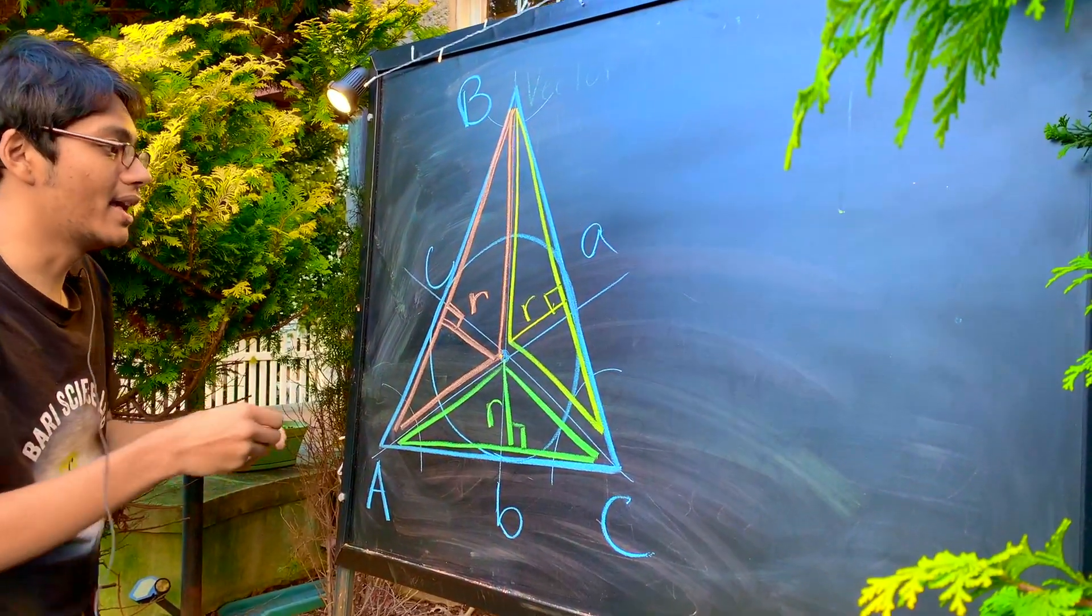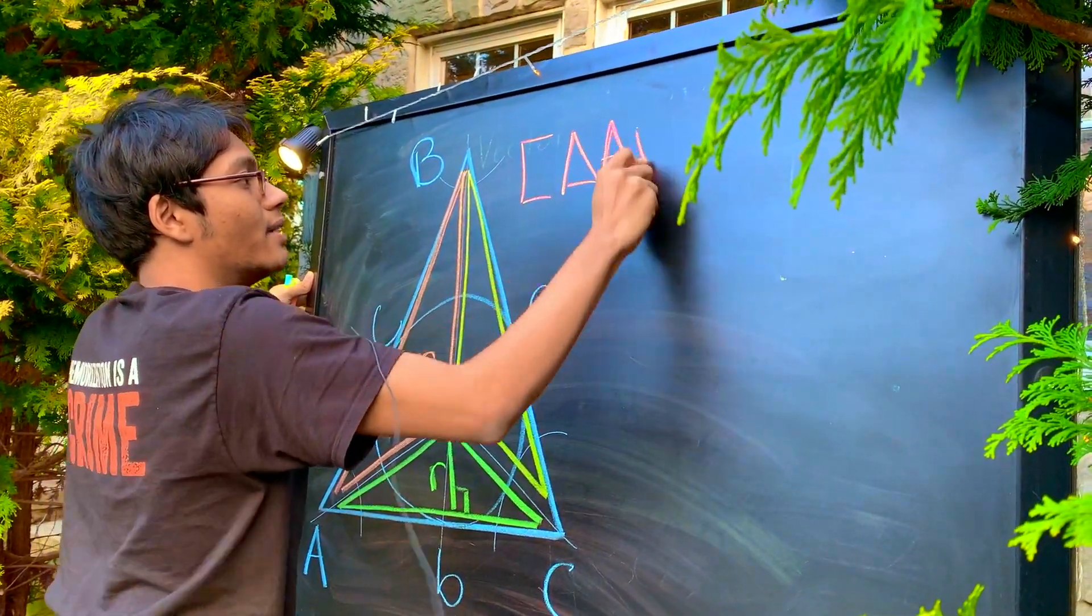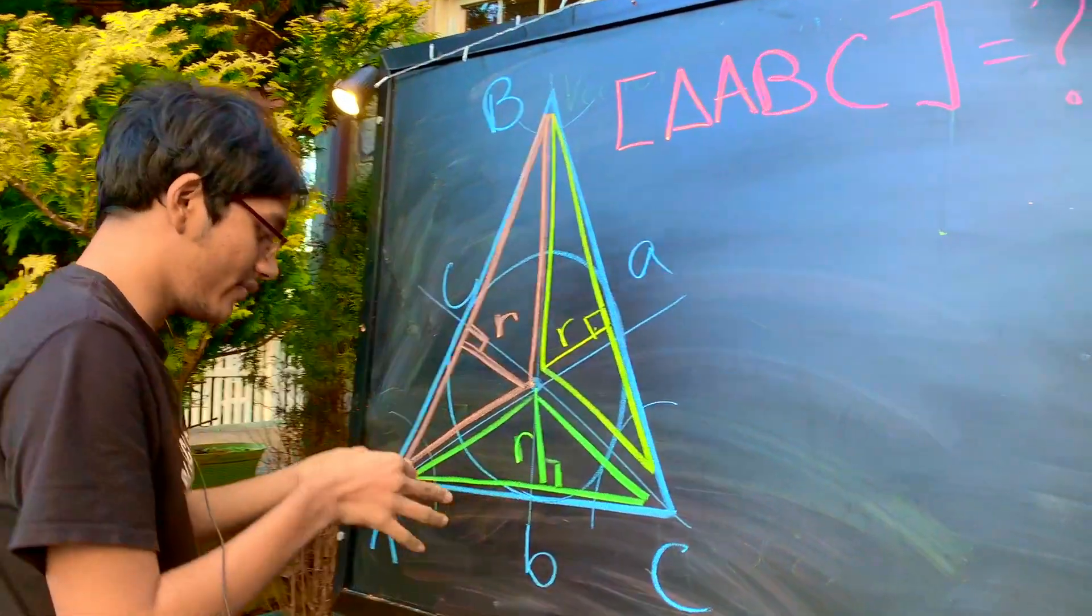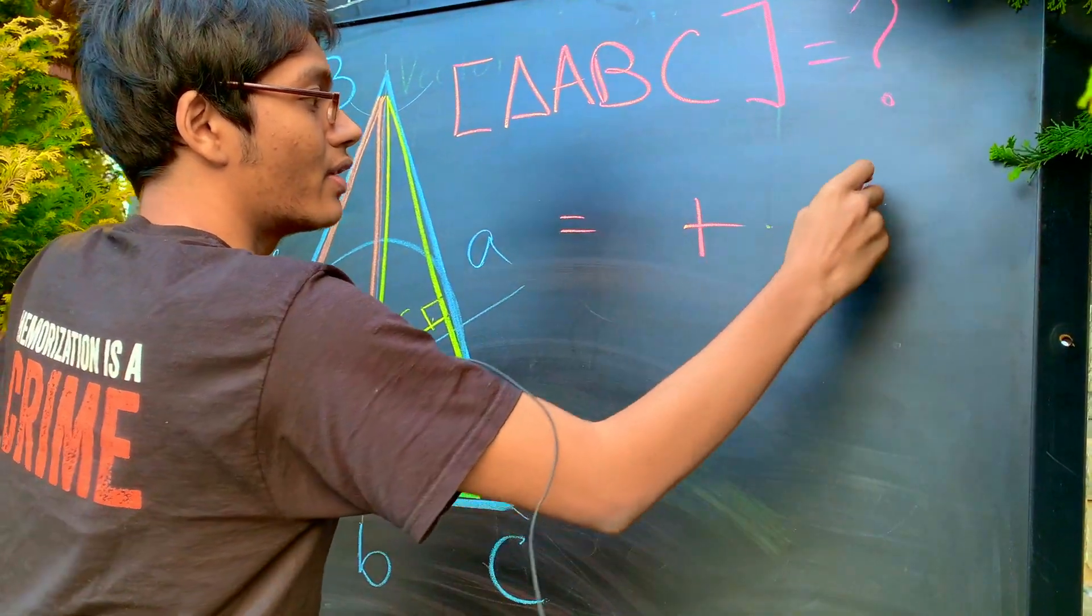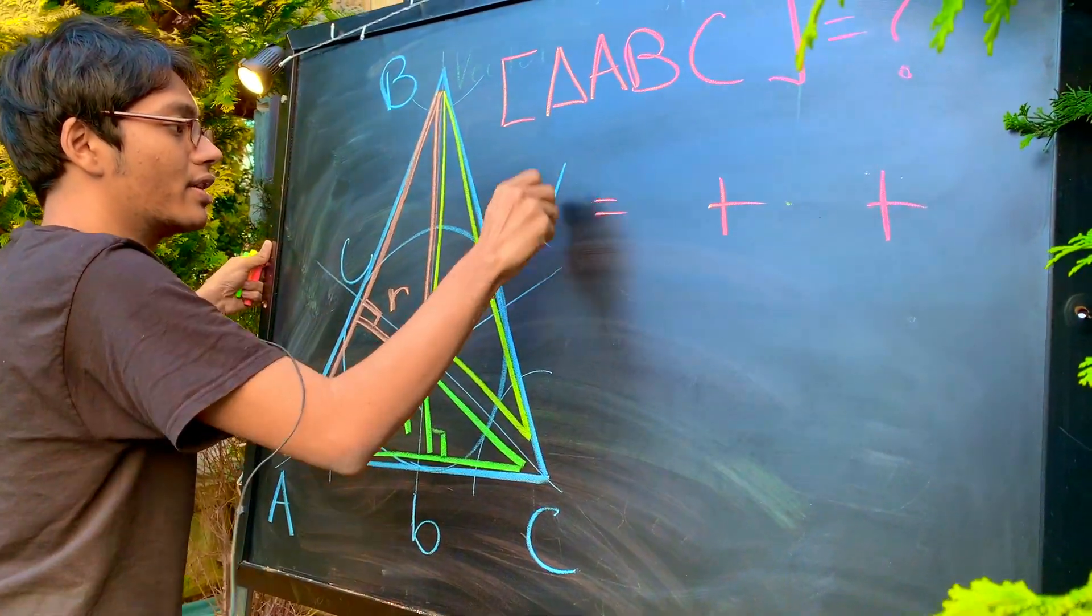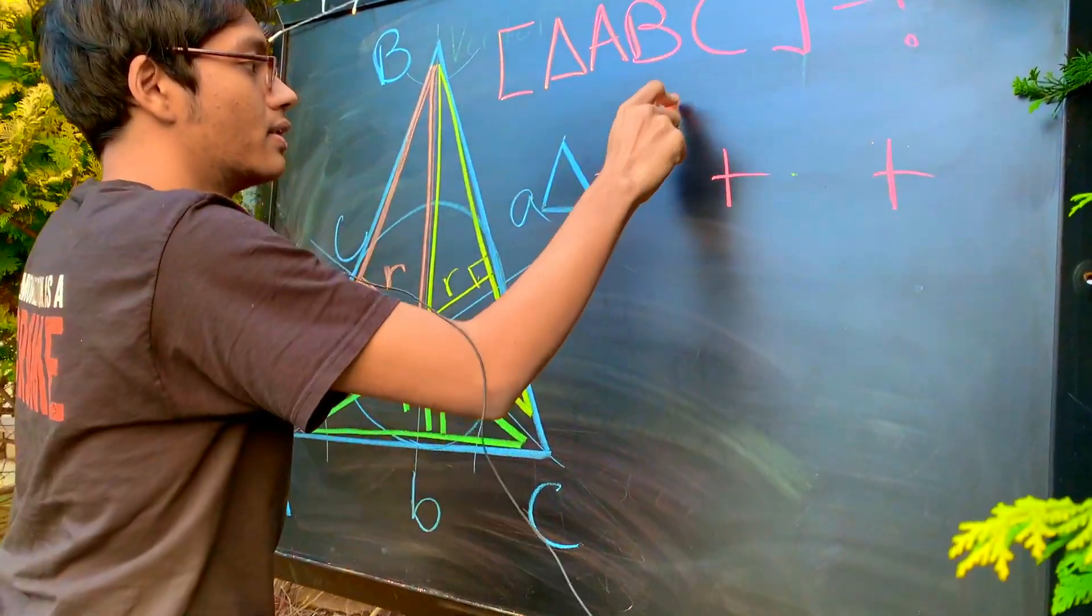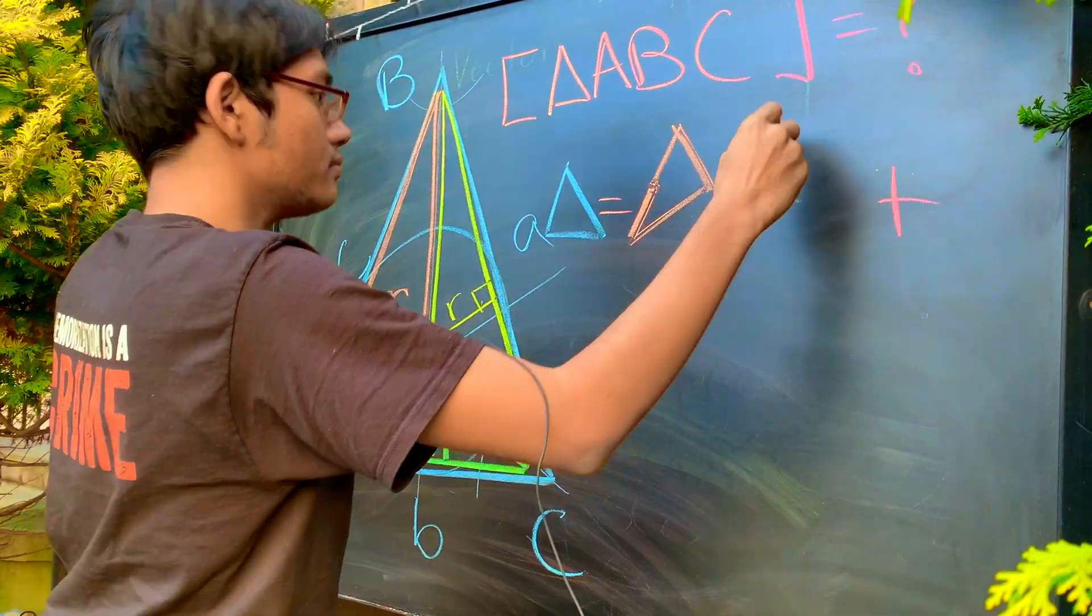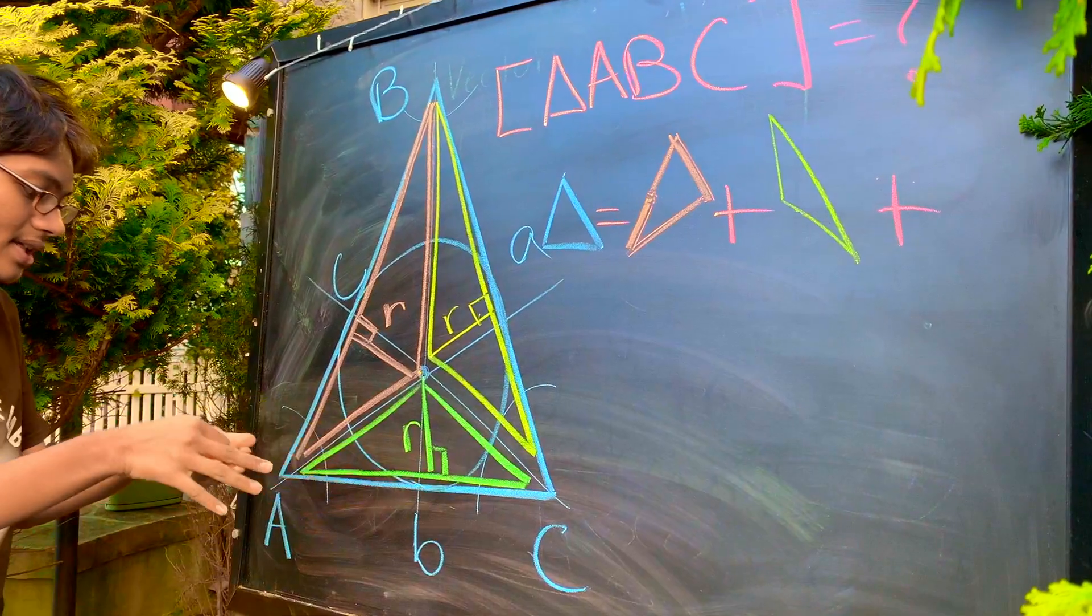And now what can we say? Well, we can say something about the area of our triangle, A, B, C. What is the area of this triangle? Well, check it out. The area of this triangle is as follows. It's going to be the sum of three other triangles. You see this blue triangle over here. This blue triangle, it's going to be the sum of the orange triangle, the yellow triangle, and finally, the green triangle.